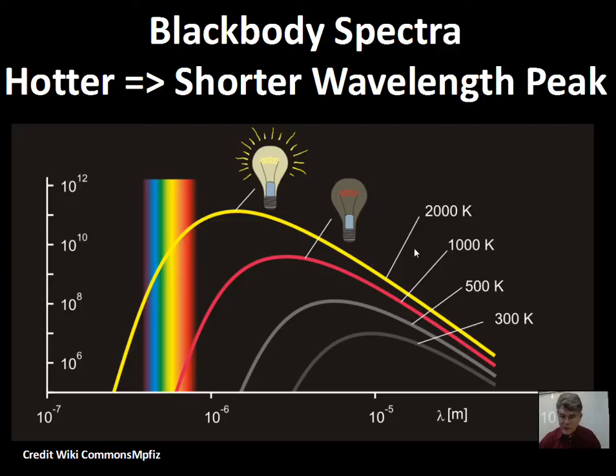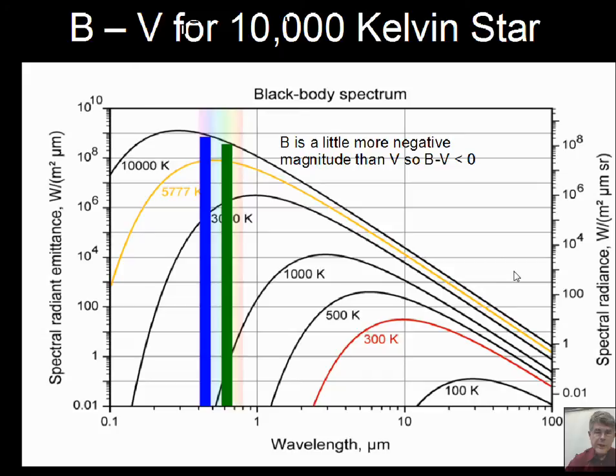Here we see some different blackbody spectra as a change in temperature has occurred. And we're going to focus in on this slide on the 10,000 K blackbody. This is a medium hot star. It's hotter than the sun. The sun is about 5,800 Kelvin. So here is 10,000 Kelvin. And I have these bars here representing the brightness or the energy at the blue filter wavelengths and the green-yellow wavelengths.